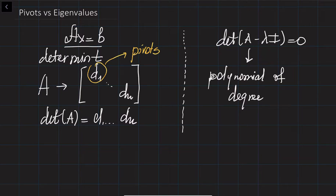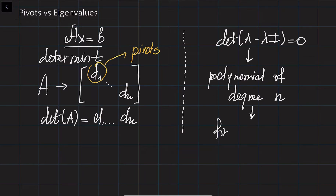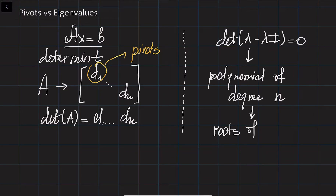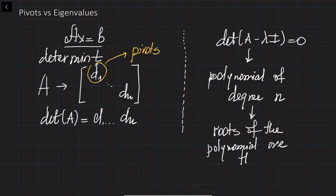If the matrix is 2 by 2, then the characteristic equation is going to be quadratic. If the matrix is 3 by 3, then the characteristic equation is cubic, and so on. Finding the roots of this polynomial gives us the eigenvalues.